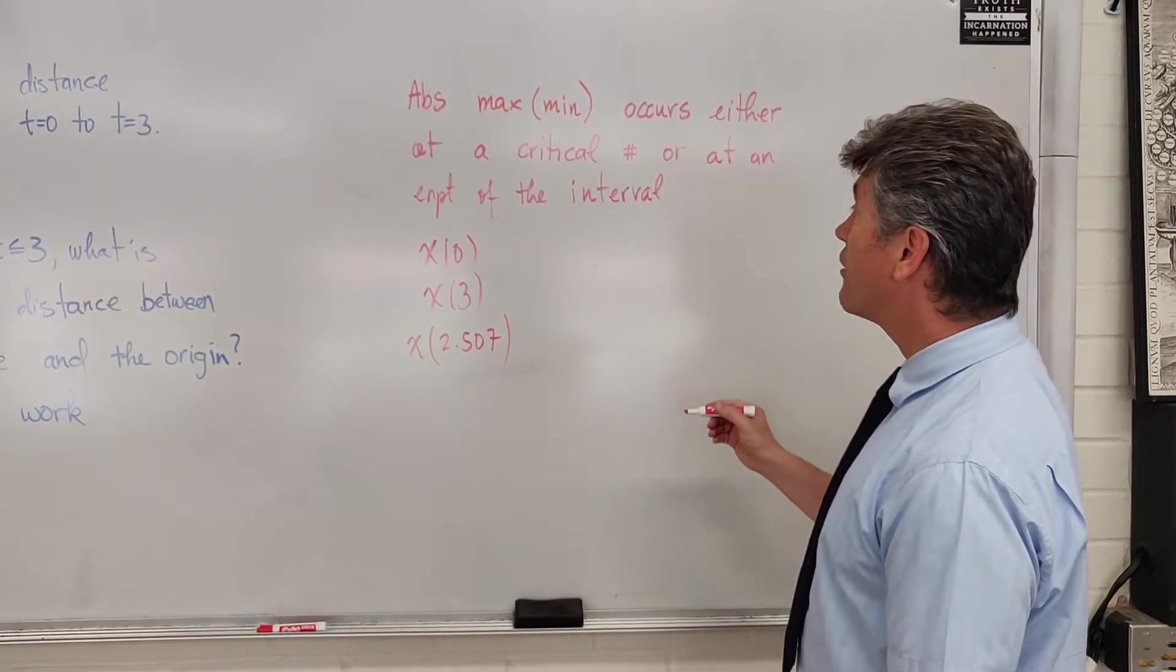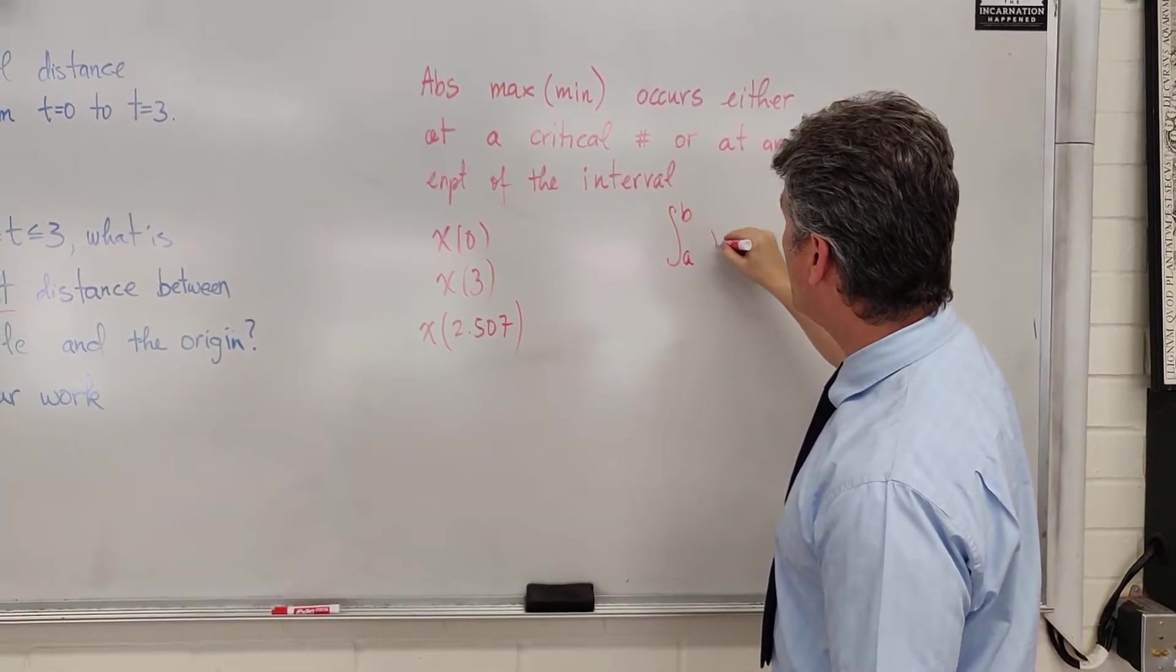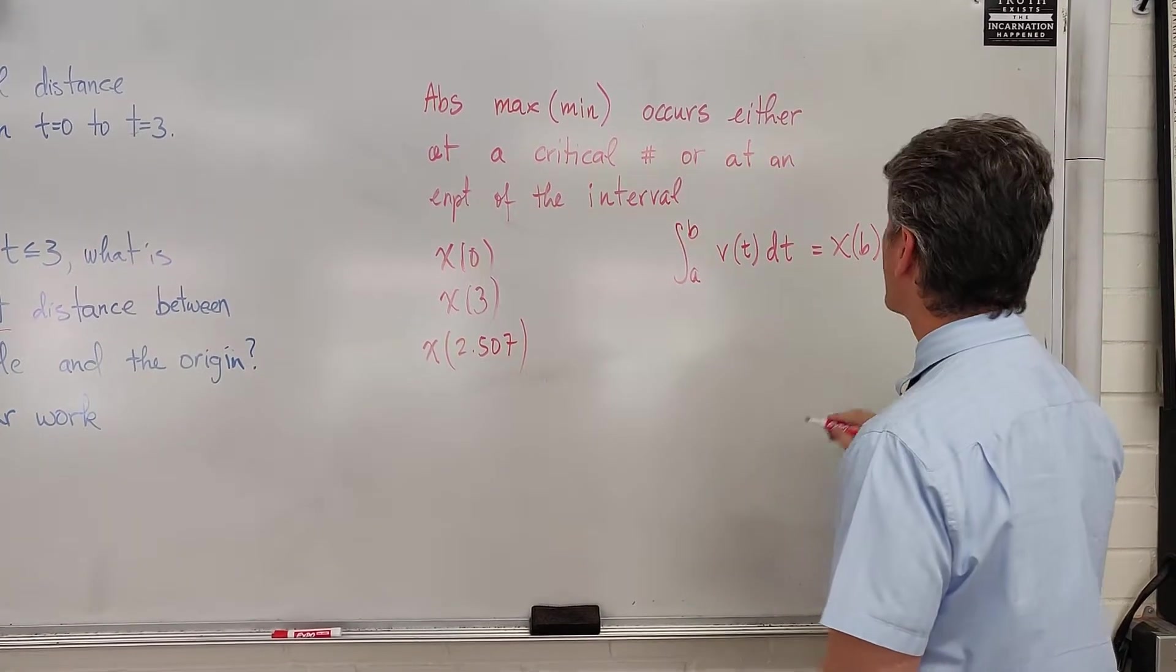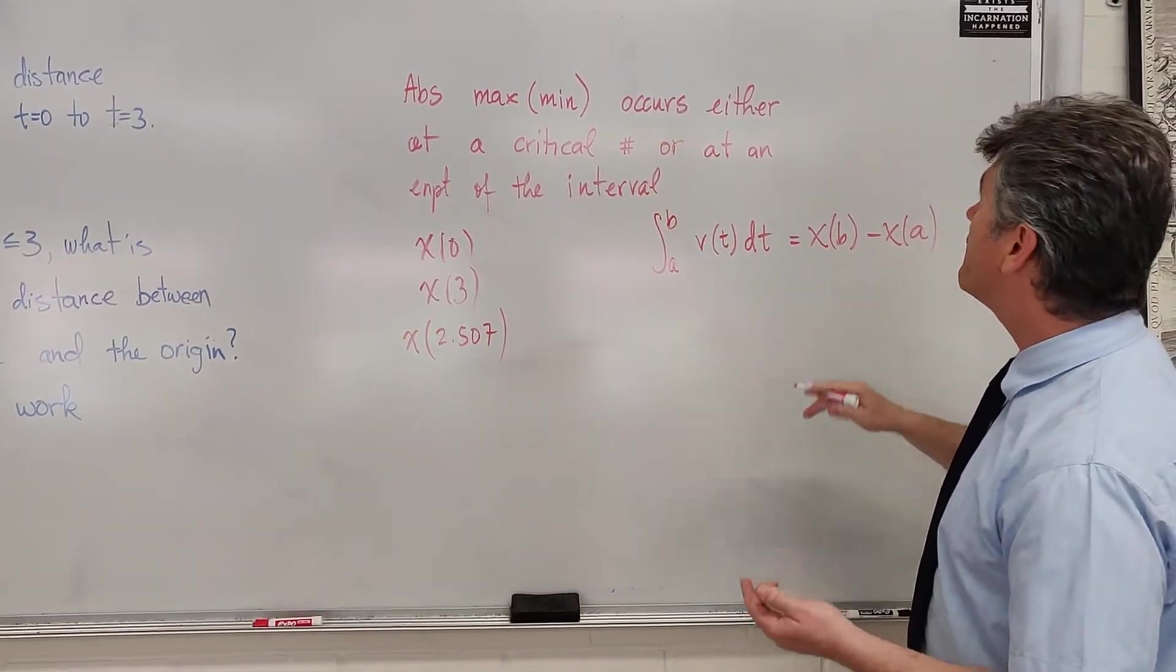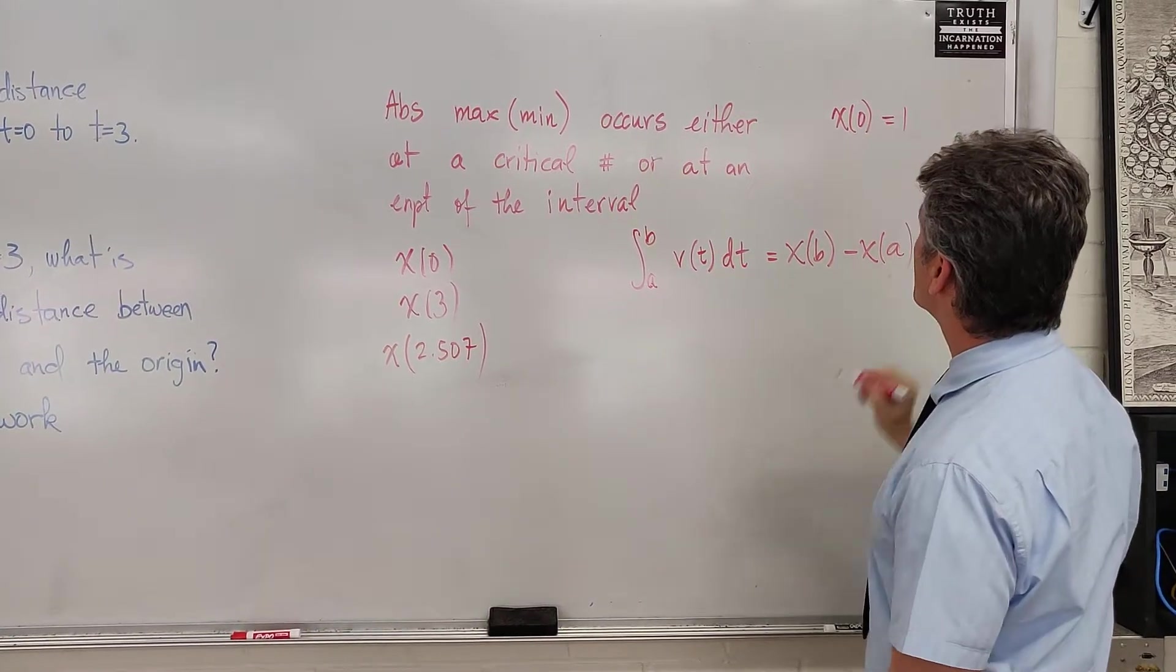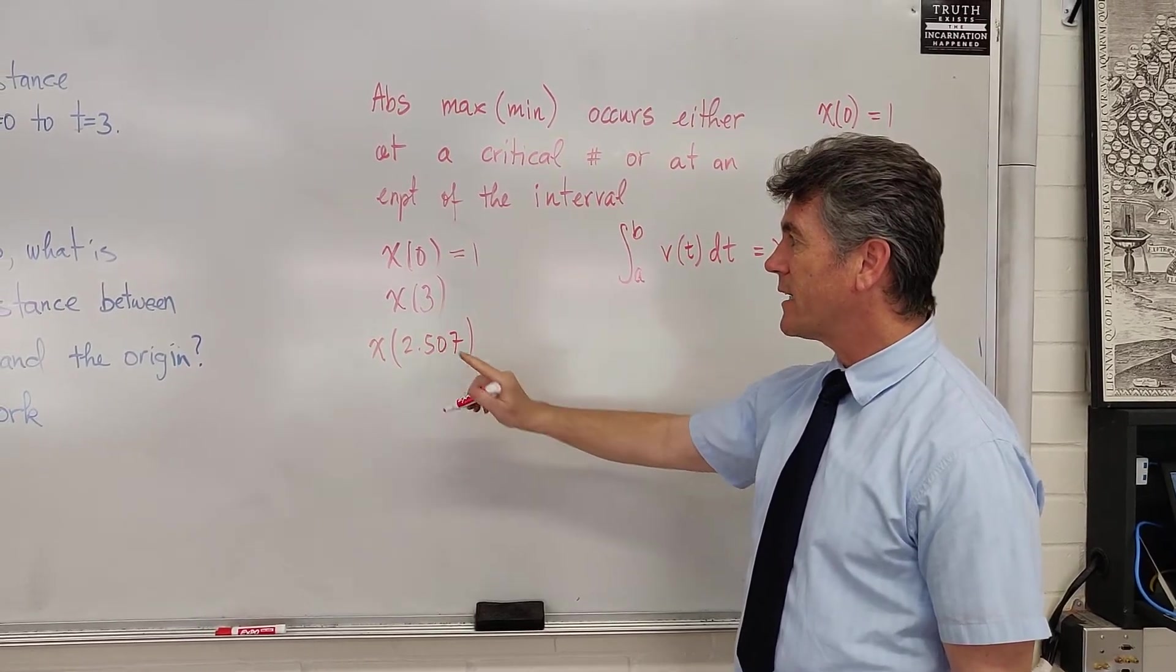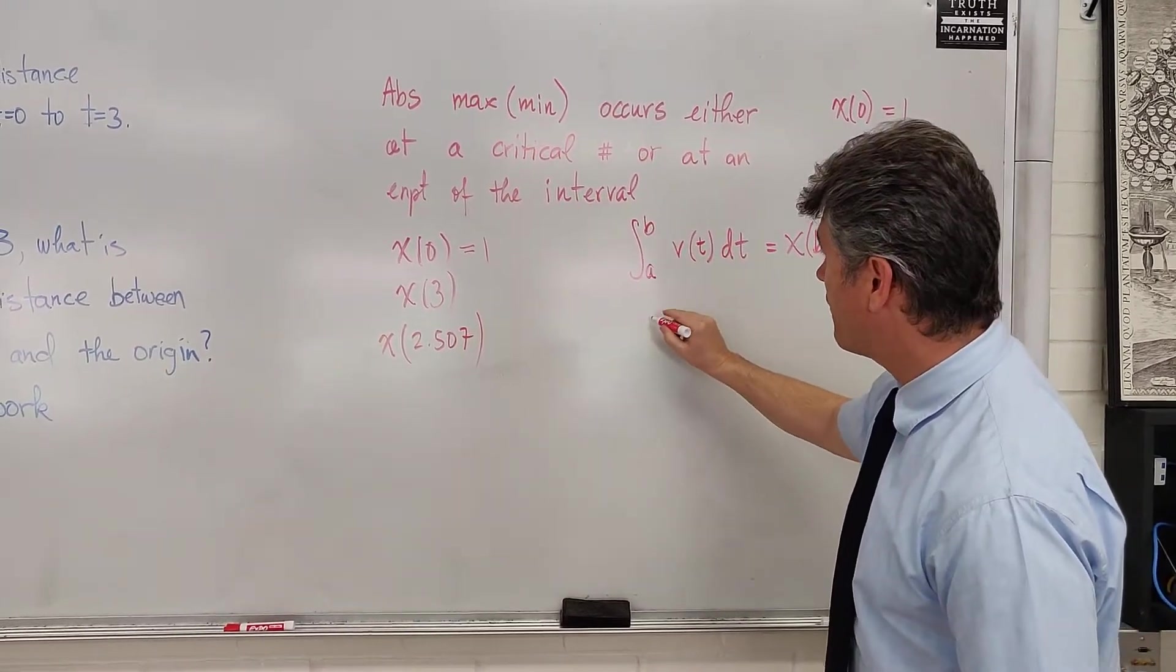What we have to do is remember that the antiderivative from a to b of v of t dt is equal to x of b minus x of a. And I don't know whether you remember or not, but one of the given information in our lesson, we are told that x of 0 is equal to 1. So we already know x of 0. So the only thing we need to do is find x of 3 and find x of 2.507.